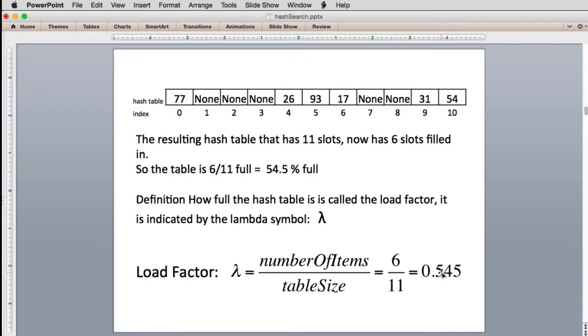So the importance of this is if as this number approaches close to zero, we have a lot of extra room in the table. But as this number approaches one, we got the table's almost filled up. So we really don't want hash tables that are almost filled up because there won't be much room to put new things in. And as they get close to filling up, we'll see some other problems as well.